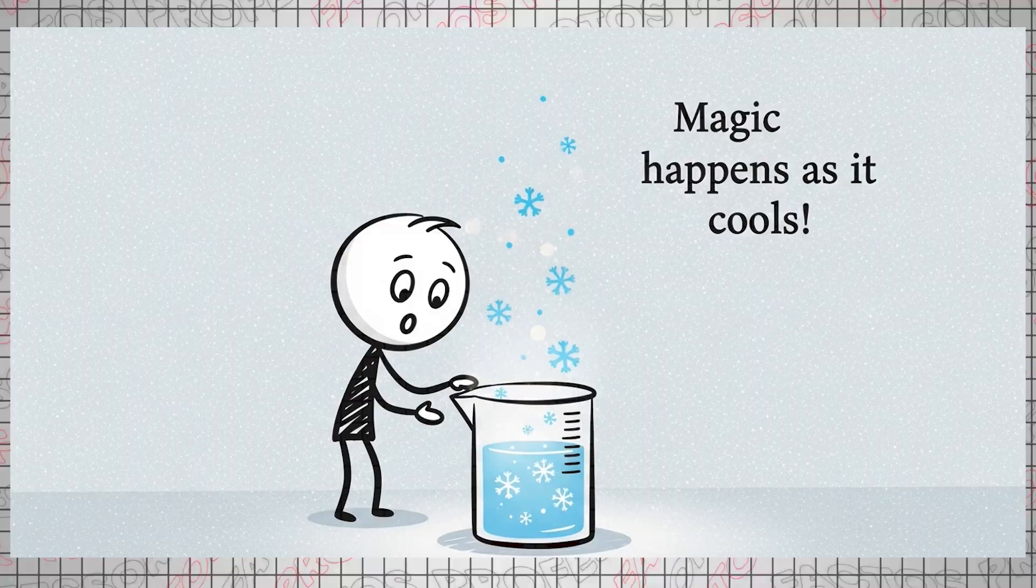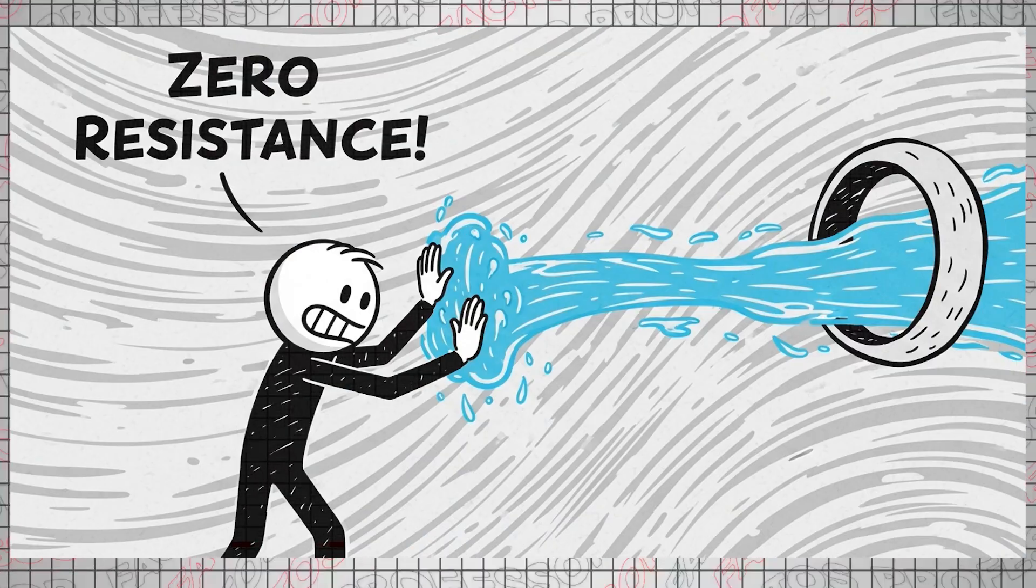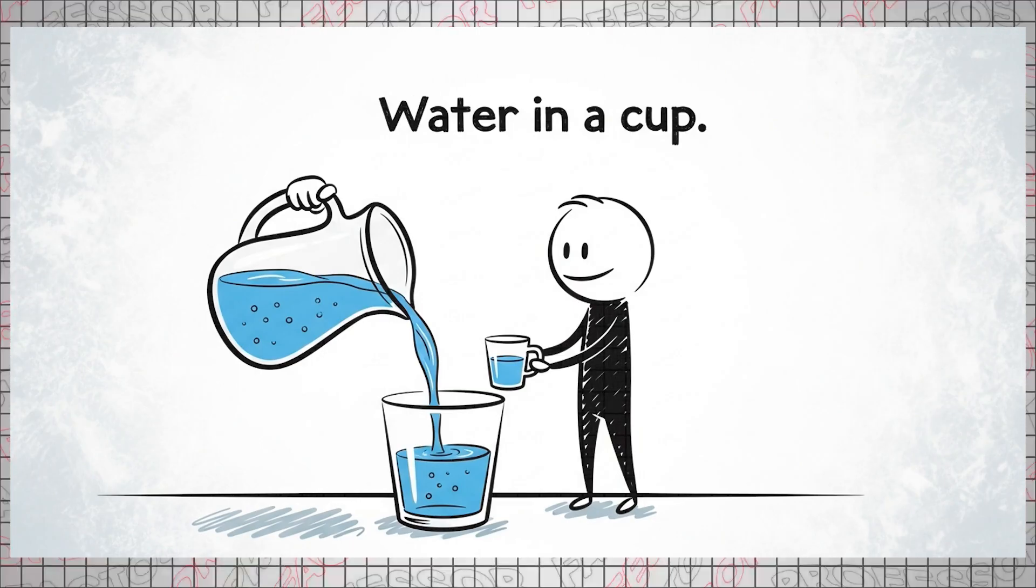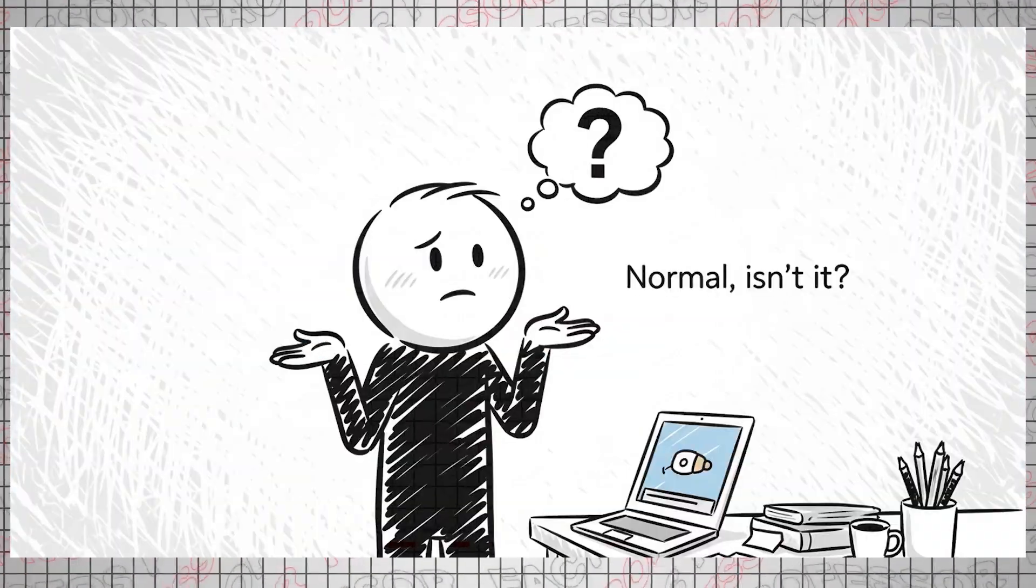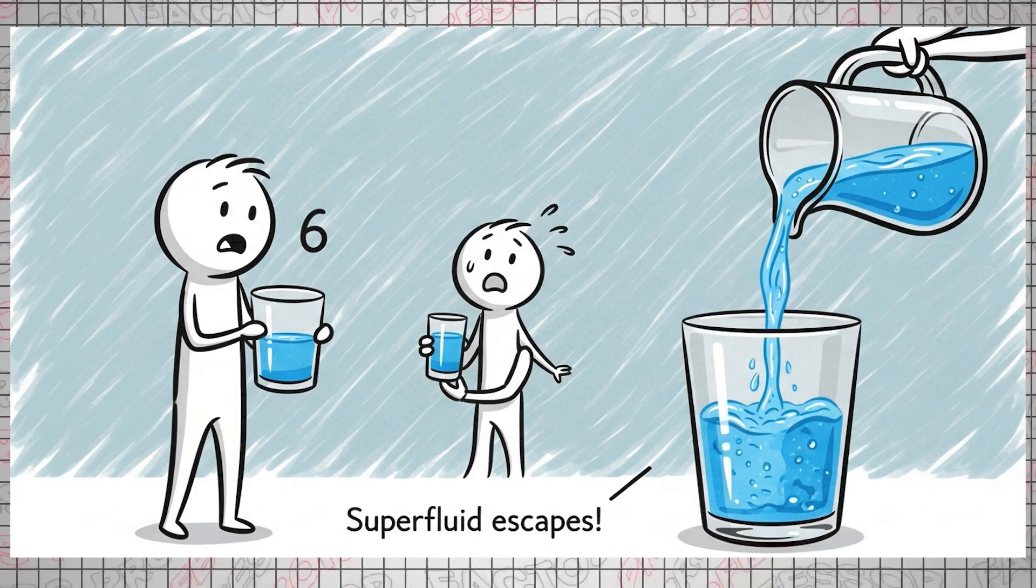Gases are no less spectacular. Helium gas transforms into a liquid at minus 269 degrees Celsius. As the temperature continues to drop, a seemingly magical phenomenon occurs. The viscosity, that is, the resistance to flow, of liquid helium becomes zero.